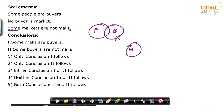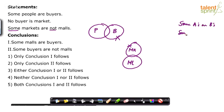Some markets are not malls. This is a 'some not' type of statement. Let's say market is MK and malls is ML. For 'some A are B' and 'some A are not B', in both cases the basic diagram is drawn in the same way — this is A and this is B.